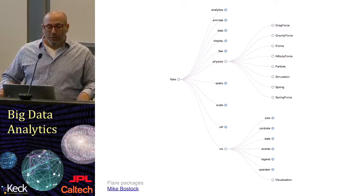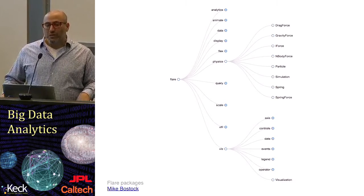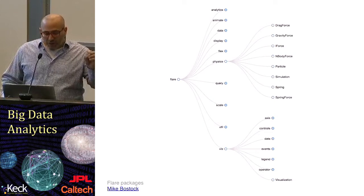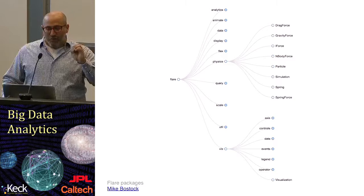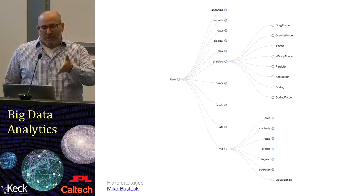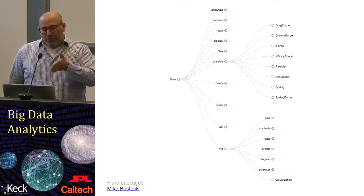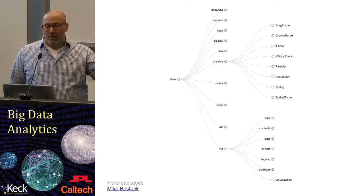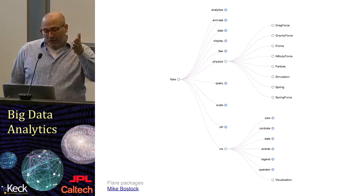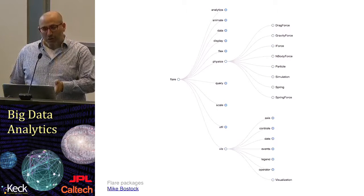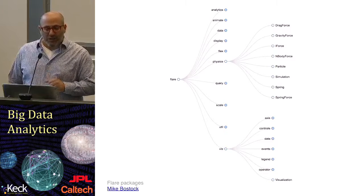The most common way that we represent data in a tree is something called a node link diagram. A node link diagram takes each different node that has children and represents the children in an indented way. In this particular node link diagram, the root of the tree is all the way to the left, each of the different leaves are shown at the second and third column, and far right you'll see all the different leaves.